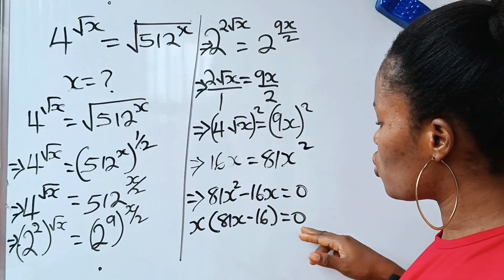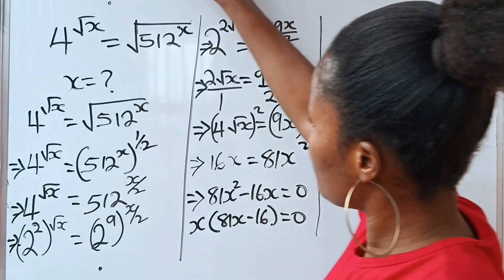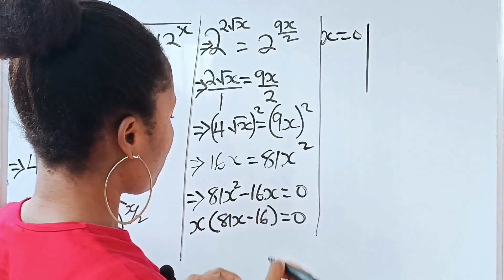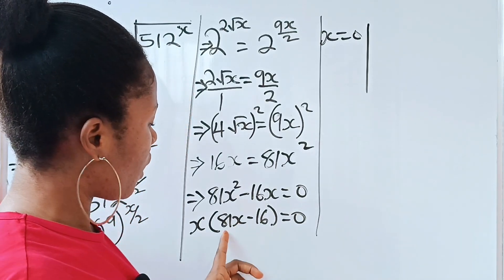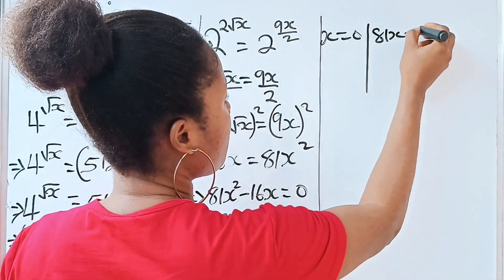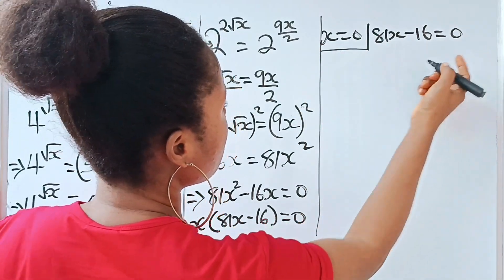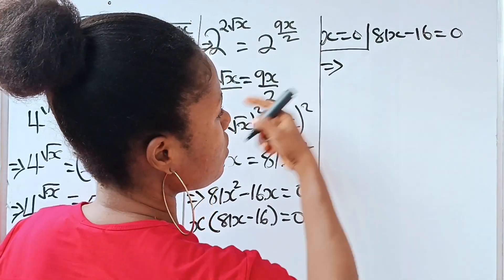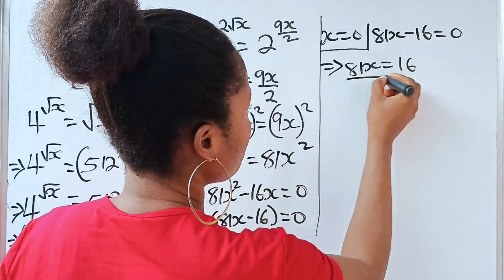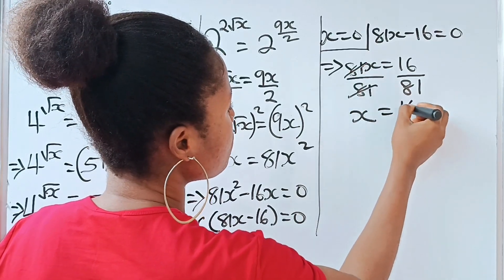So here we have two equations. The first is x equals 0, and the second is 81x minus 16 equals 0. For the second equation, 81x equals 16. Dividing both sides by 81, we get x equals 16 over 81.